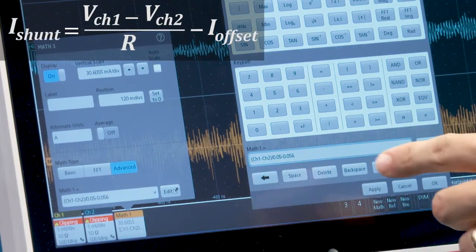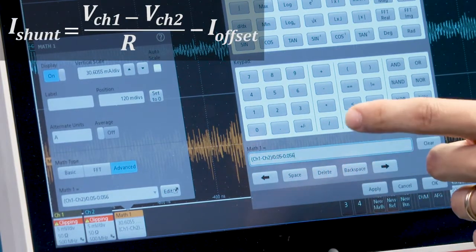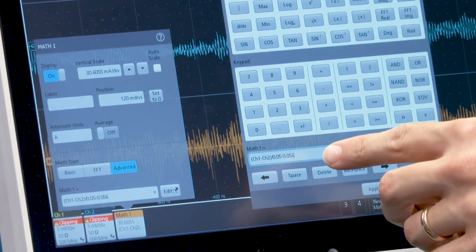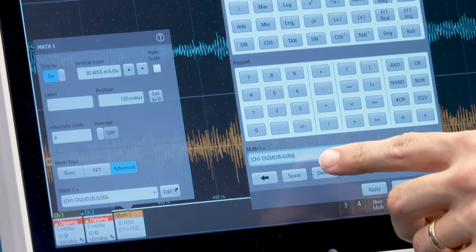Make the math channel as the difference between the two waveforms divided by the resistance of the shunt. I already calculated the difference was 56 milliamps so I added that in here.